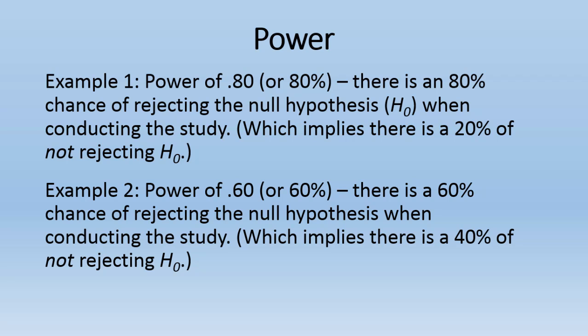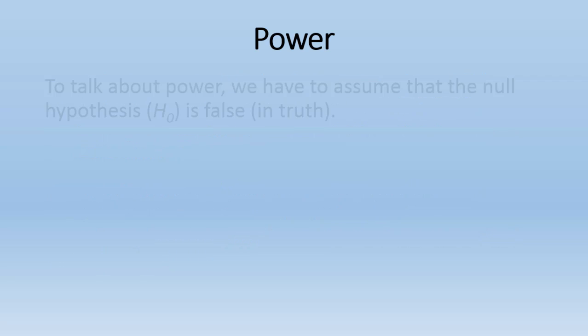For our second example, a power of 0.60 or 60% indicates there is a 60% chance of rejecting the null hypothesis when conducting the study. This again assumes that the null is false in truth. And if there's a 60% chance of rejecting the null, then that implies there's a 40% chance of not rejecting the null, or failing to reject the null, or accepting it.